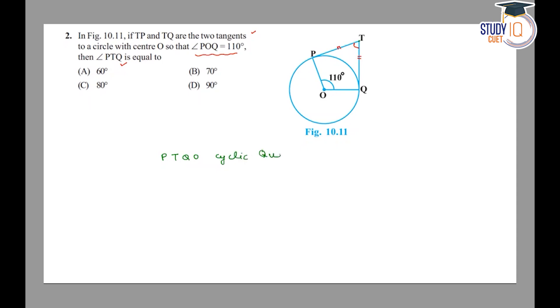This is a cyclic quadrilateral. So if this is a cyclic quadrilateral, then you can see that the opposite angles in a circle are equal to the sum of 180 degrees. So angle POQ plus angle PTQ, this equals 180 degrees.